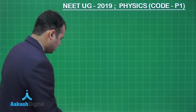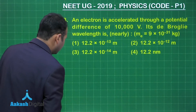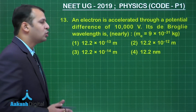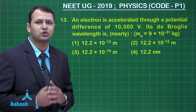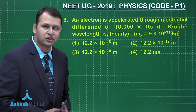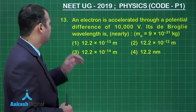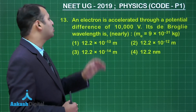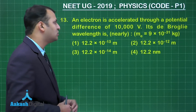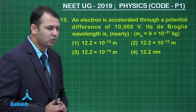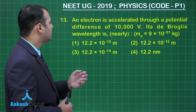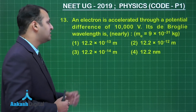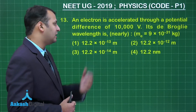Let's take question number 13. This question belongs to chapter dual nature of radiation. An electron is accelerated through a potential difference of 10,000 volts. Its de Broglie wavelength is nearly — we have to find it among four options.